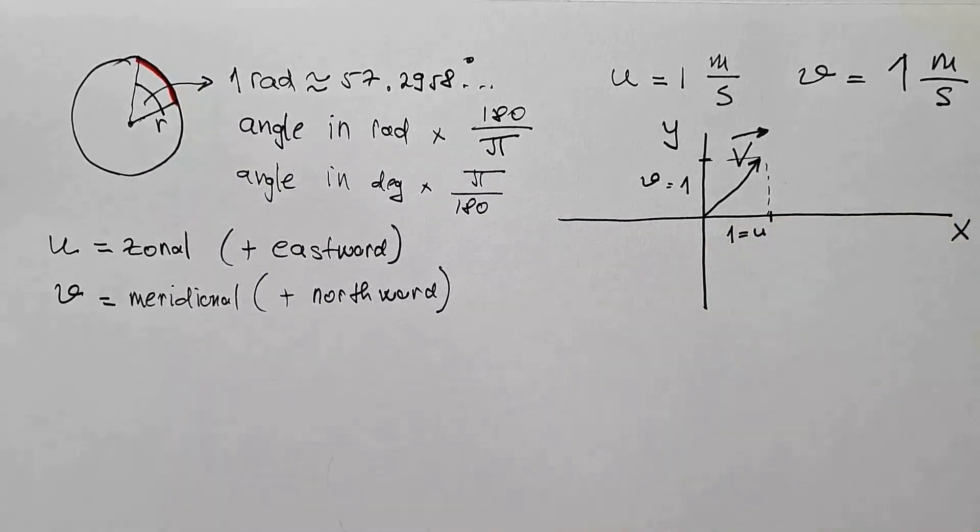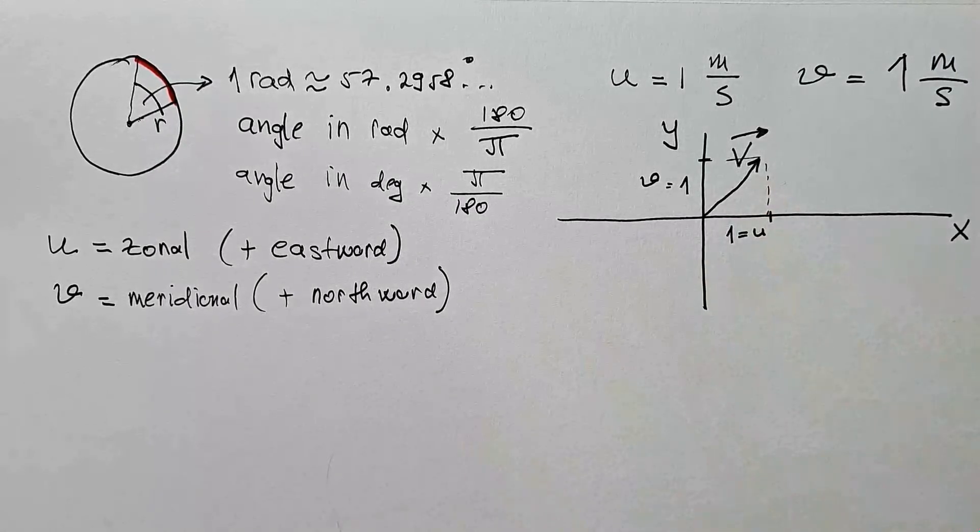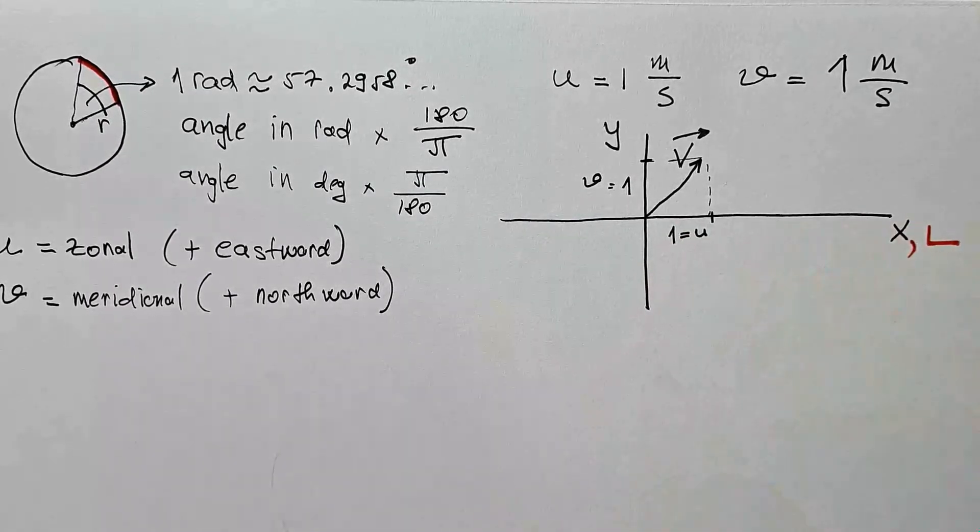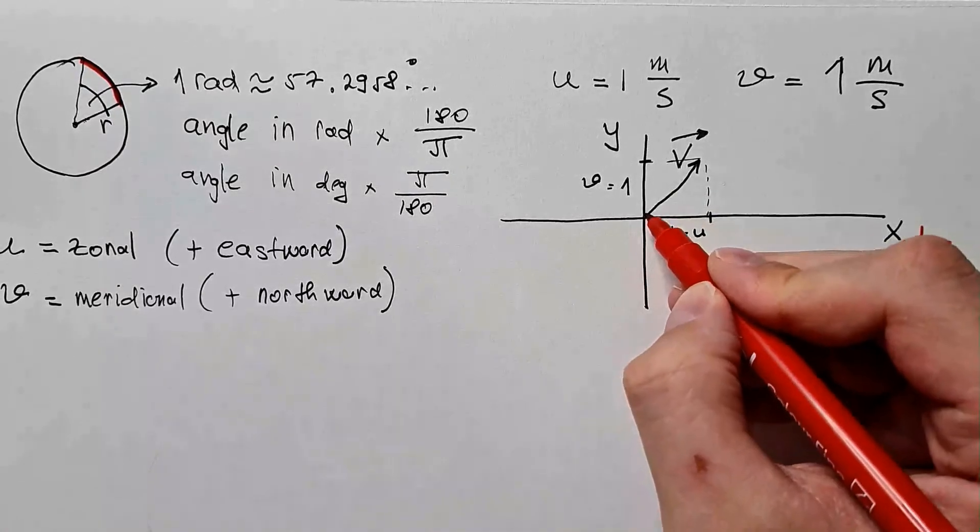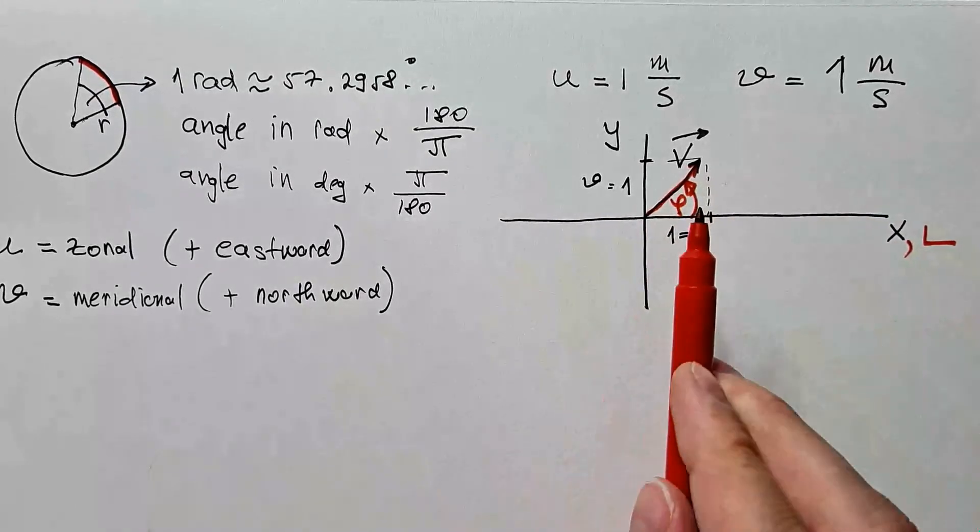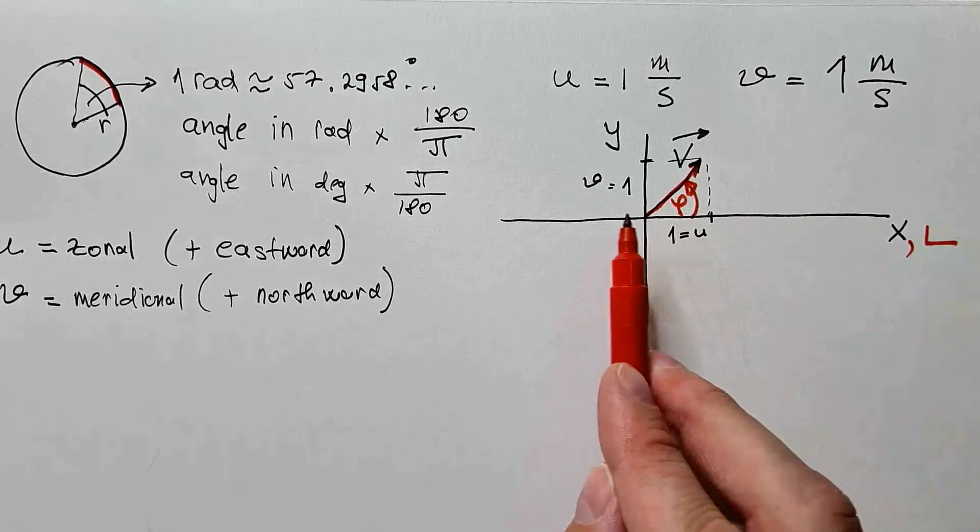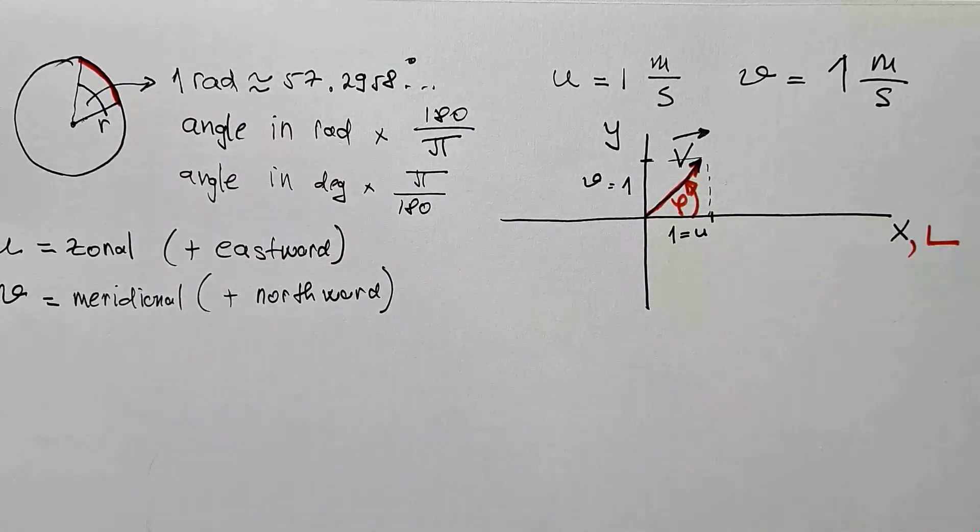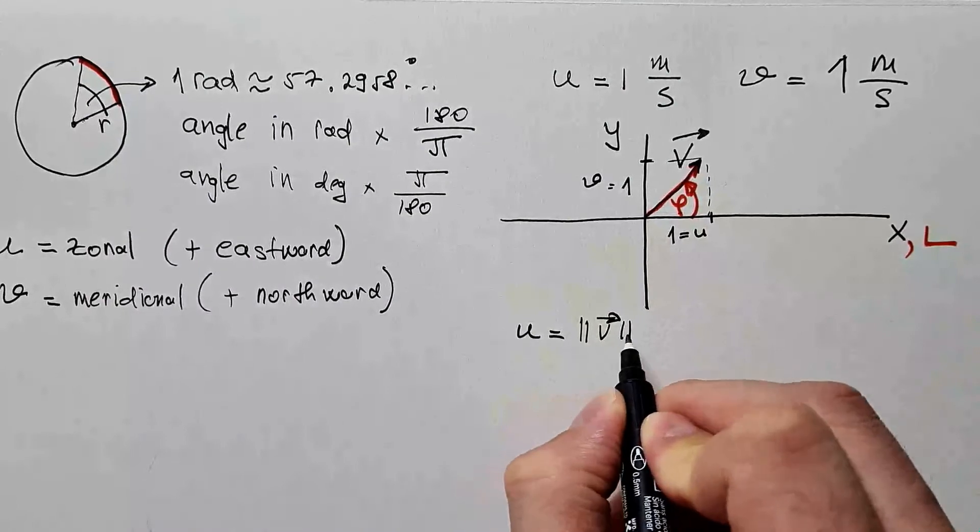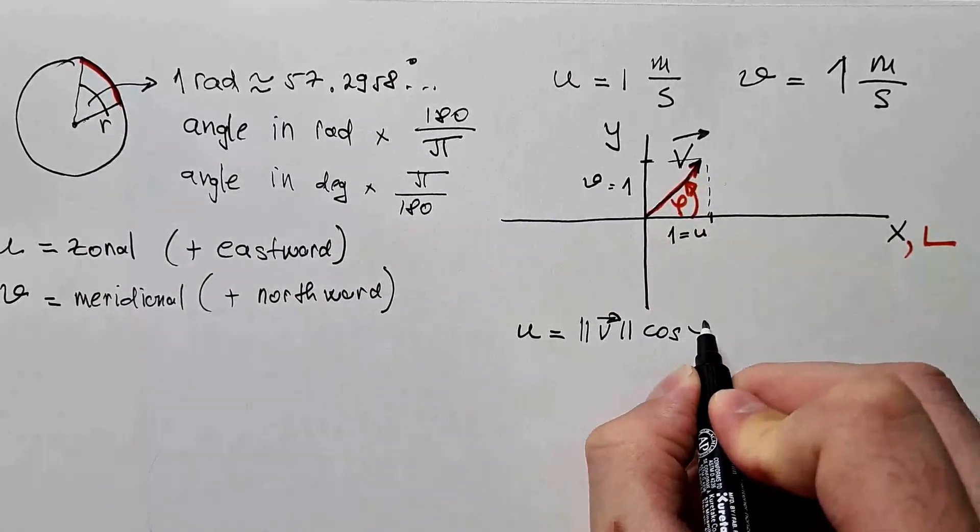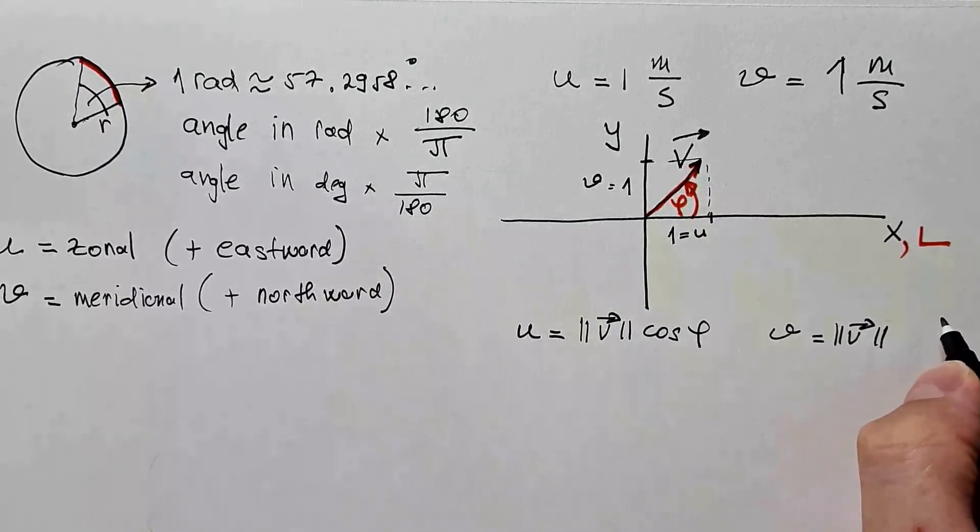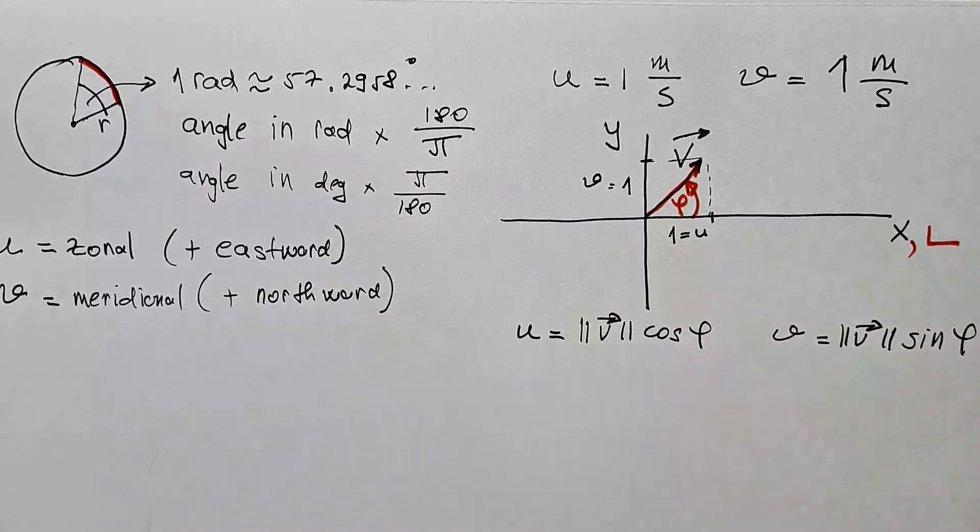This same wind in polar coordinate system, where I align polar axis L with the x direction, would have this vector V and the angle phi, where phi is counterclockwise from L. So from this graph, we can already see that U component is intensity of this V times cosine of angle phi, and V component is intensity of vector V times sine of angle phi.